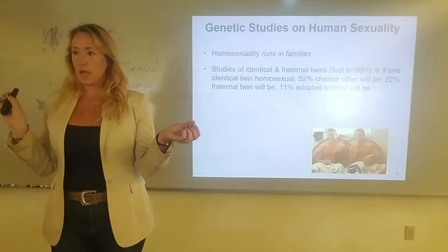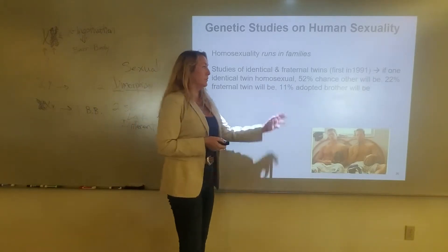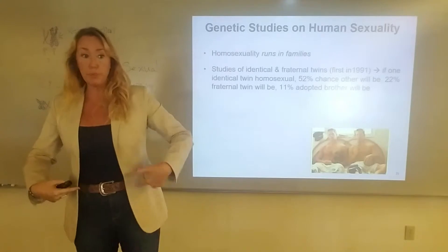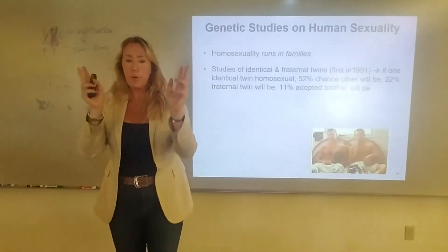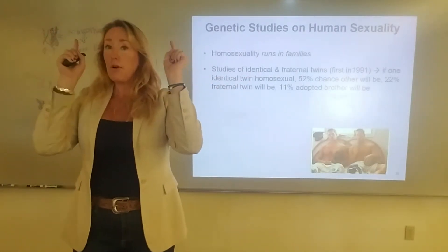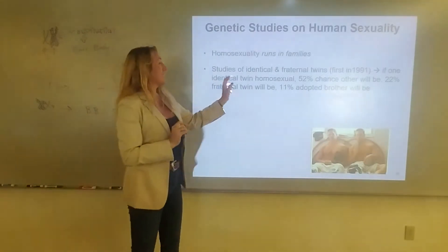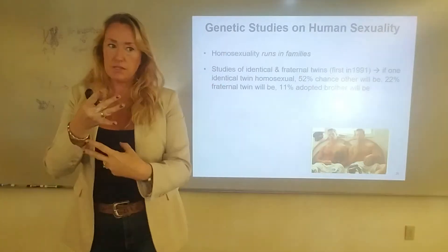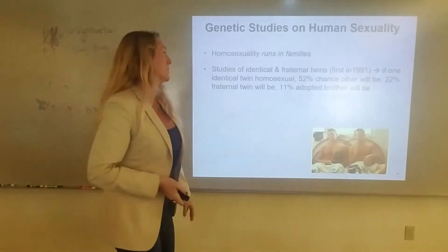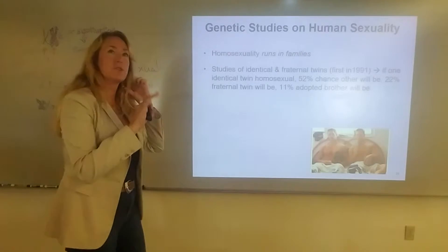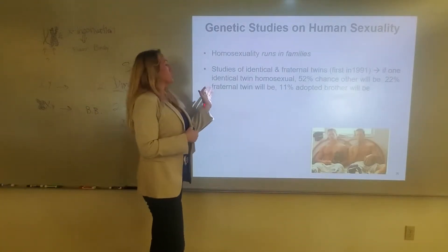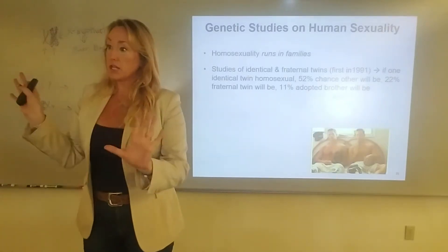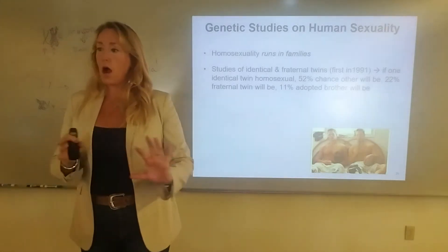And even if these twins are separated, there's still that 52% chance. There's a 22% chance a fraternal twin will also be homosexual. Fraternal twins result from two different eggs — sometimes a woman ovulates more than one egg, both get fertilized, and two babies develop in the uterus. Identical twins happen when the early embryo splits in two and keeps dividing separately. There's an 11% chance an adopted brother will be homosexual. So you can see these numbers decrease the more distantly or non-genetically related the individuals are.